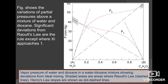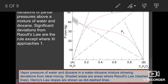Moving to the diagram portion: this figure shows the variation of partial pressure above a mixture of water and dioxane. Significant deviations from Raoult's Law are the rule except where xi approaches 1, as you can see. The diagram shows the vapor pressure of water and dioxane in the water-dioxane mixture, illustrating deviation from ideal mixing in the shaded portion. The dashed lines represent Raoult's Law and the dotted lines show the Henry's Law slope.